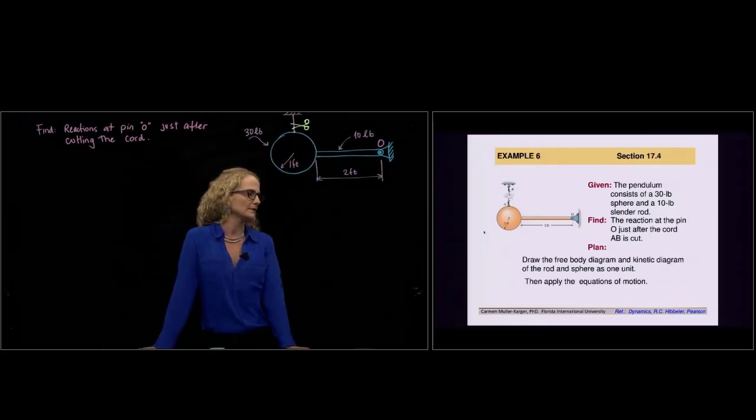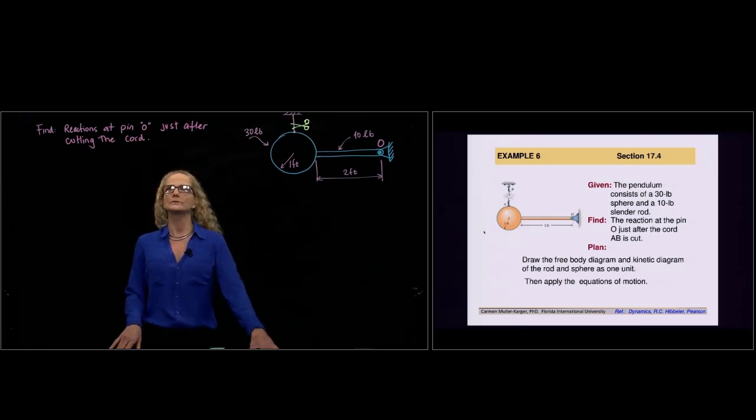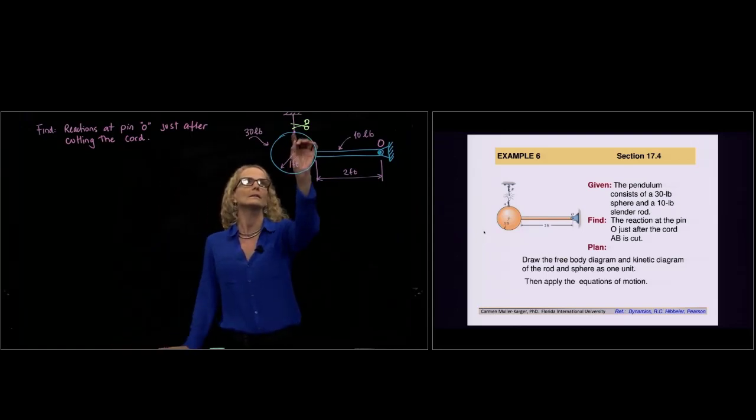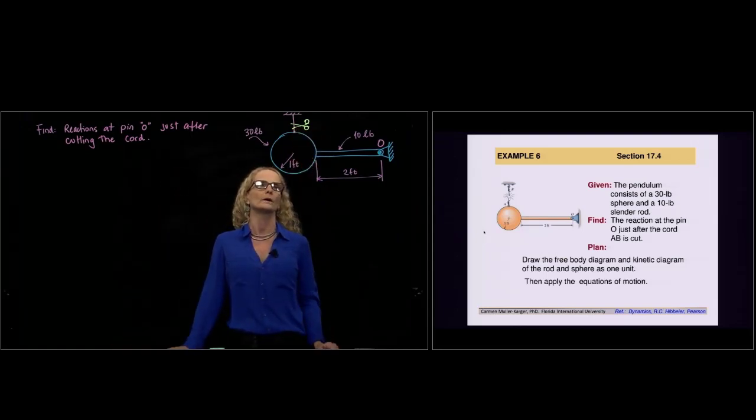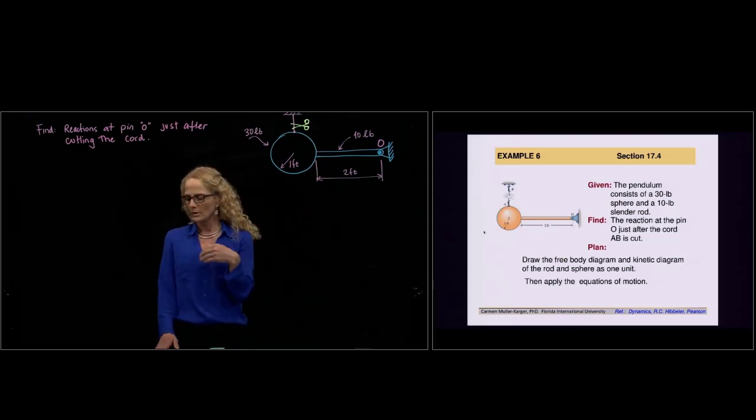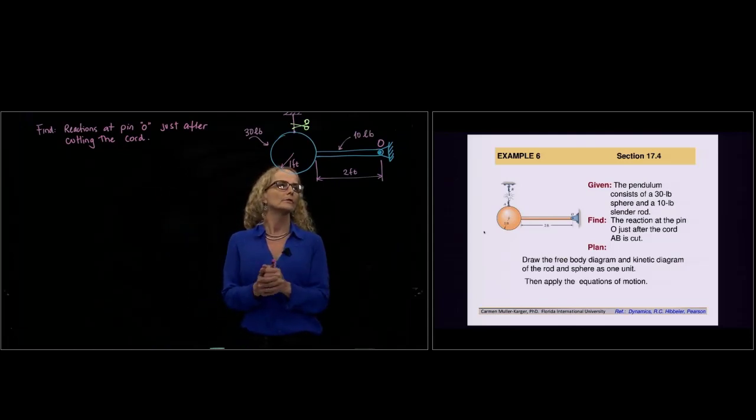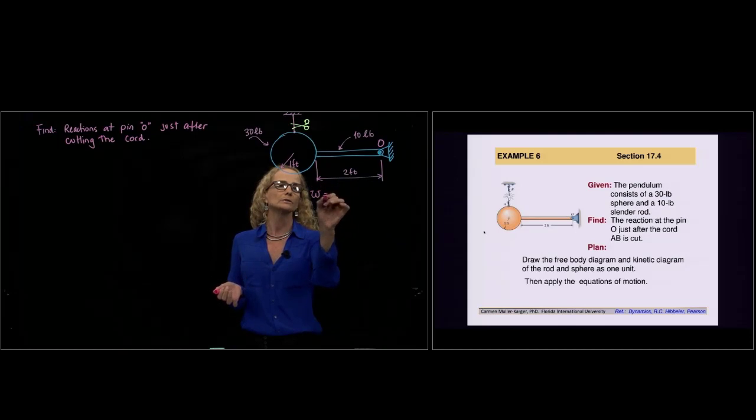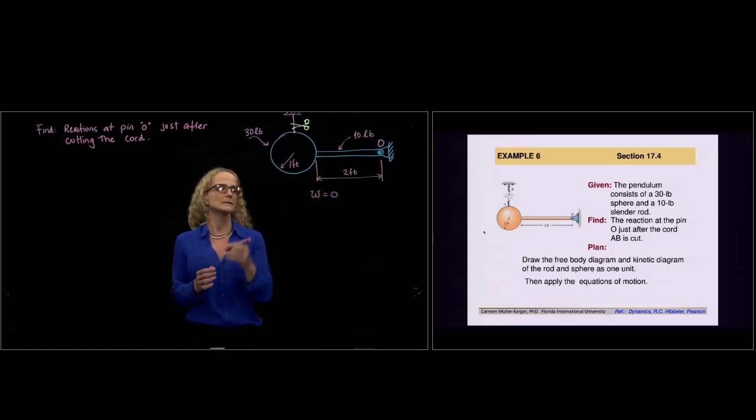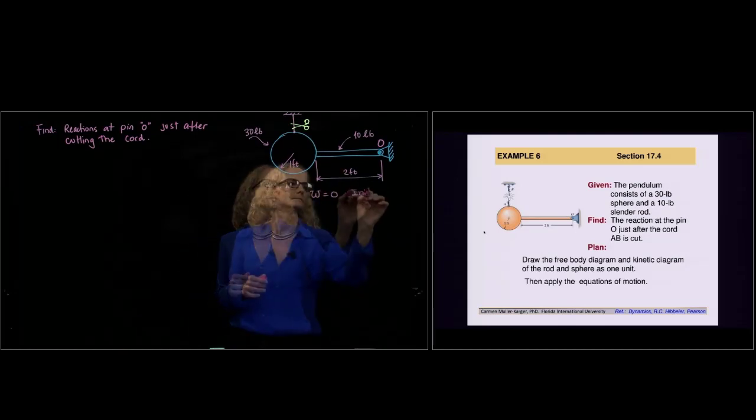This is example number 6 of section 17.4. We will calculate the reactions at point O just after we cut the chord, meaning the initial motion. When it's the initial motion, the angular velocity of the system is equal to zero because it's the initial motion.